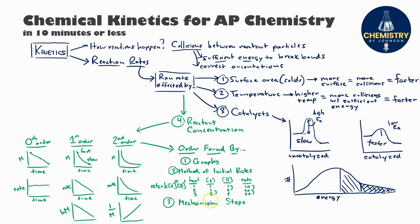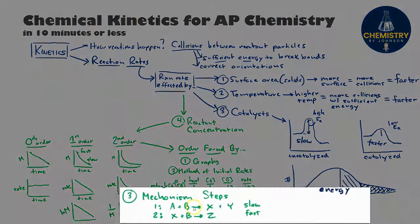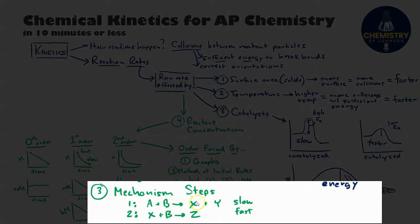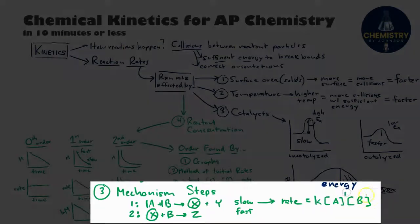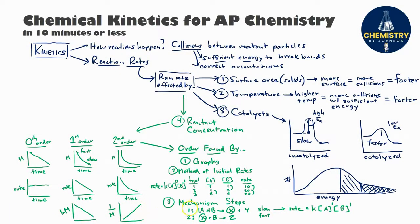You can also determine reaction order by examining mechanism steps. Given step one and step two, you can add them together and cancel intermediates like X that appear on opposite sides of the reaction arrow. If step one is the slower step, it is called the rate-determining step. You can then write the rate law for the overall reaction by using the coefficients of the reactants in that slow step as the reaction orders. Remember: you can only use coefficients as orders for mechanism steps, not for the overall reaction equation.